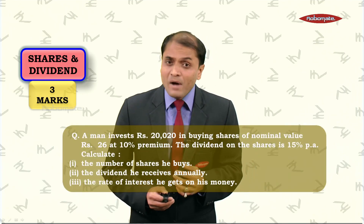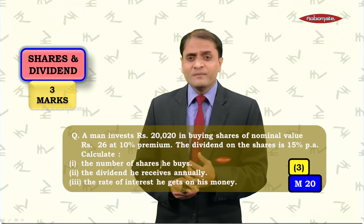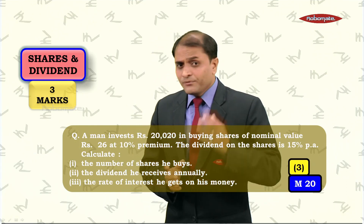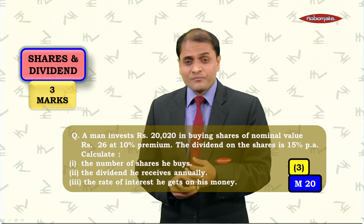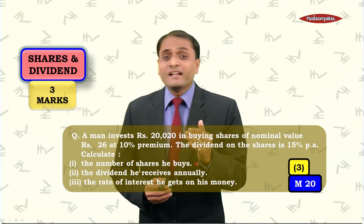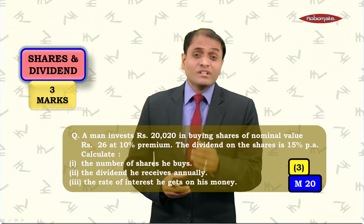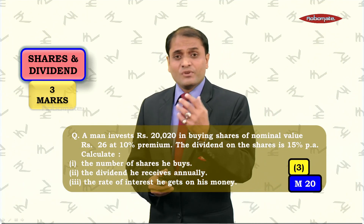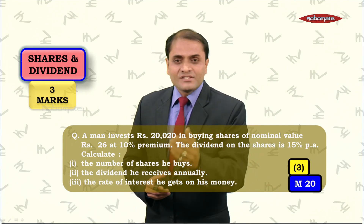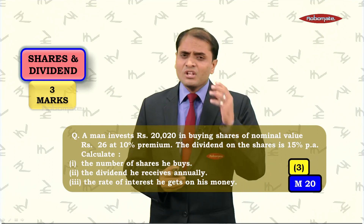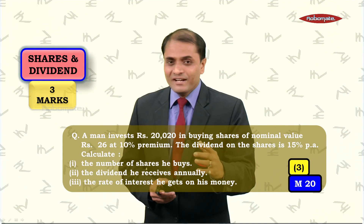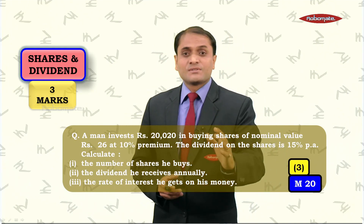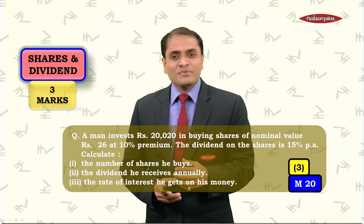The last chapter in this section is shares and dividend. You may find a typical three-mark question from this chapter, and this sum can be found in module number 20. Recalling all the formulas studied in shares and dividend: there is a formula to find the number of shares — one sub-question here asks you to find the number of shares using that formula. Another sub-question requires finding the dividend using the second formula. The last sub-question asks you to find the rate of interest a person gets from dividend. This is the type of sum which normally appears from shares and dividend. I hope you understood all the different types of questions normally asked from commercial mathematics. In the next module, we will move on to the other sections.